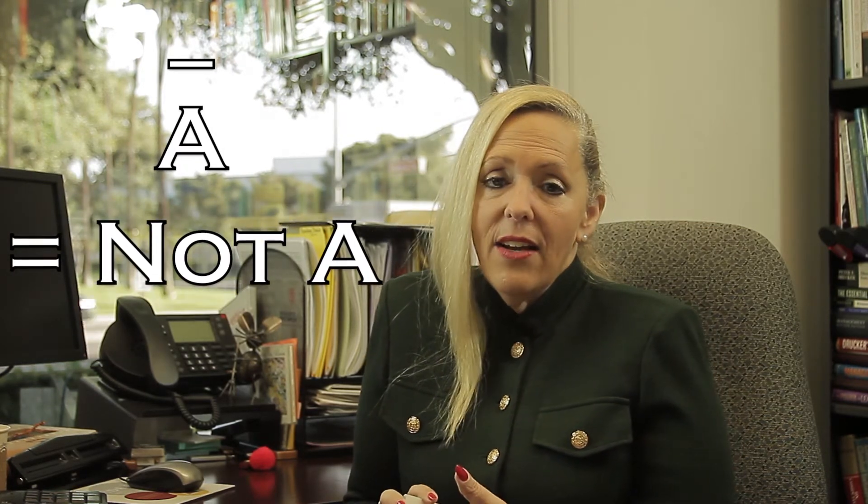The complement of an event, denoted by an A with a bar over top, which means not A, or all of the events that do not include A. The probability that A does not occur is given by the symbol P of not A. If the probability that A occurs is 0.4, then the complement or probability that A does not occur is 0.6.